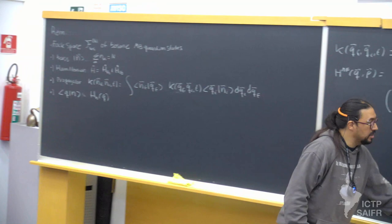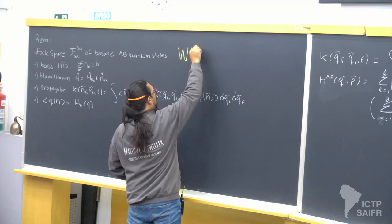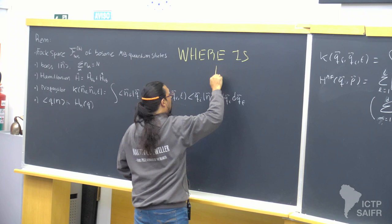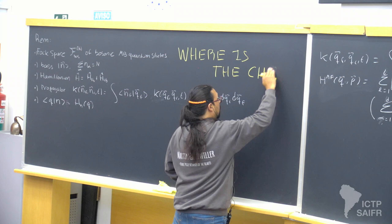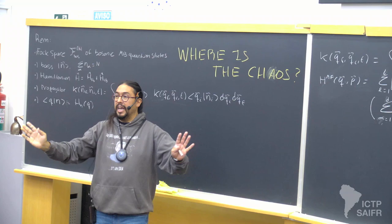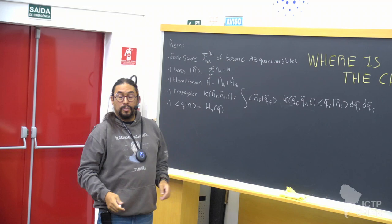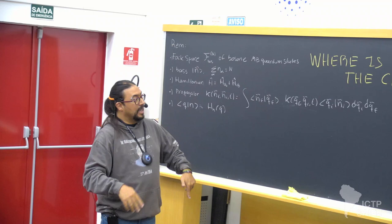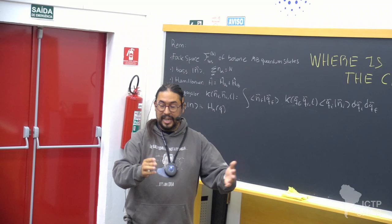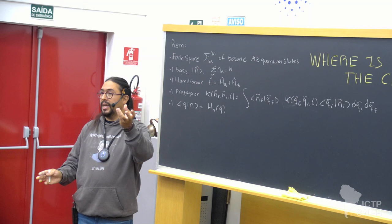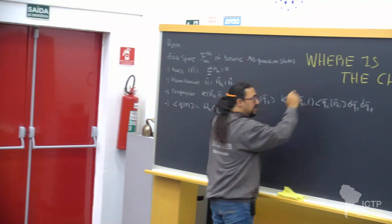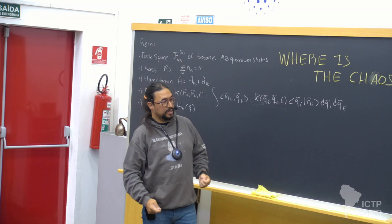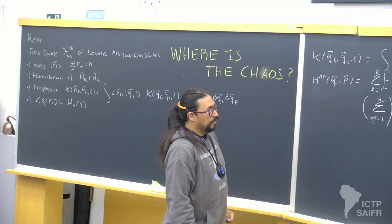Nobody asked about chaos yet. I started with quantum mechanics — strictly speaking no chaos because quantum mechanics is a linear theory. Then I constructed the path integral (exact), then did the semi-classical approximation — and I never used anything related to the chaotic or non-chaotic properties of the classical mechanics. Chaos will enter when we apply this formalism in the second part of today.